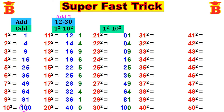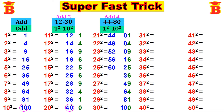Next step: write numbers from 44 to 80 by adding 4. Take the last number without the unit digit — that is 40. Add 4 to get the first number 44. Then continue adding 4: 48, 52, 56, 60, 64, 68, 72, 76, 80.